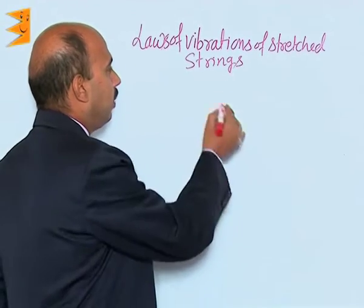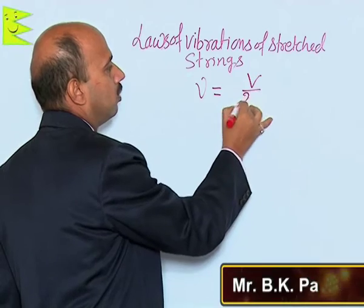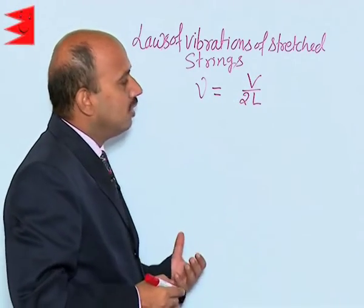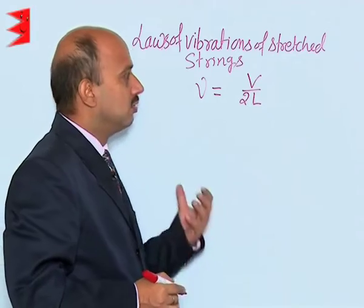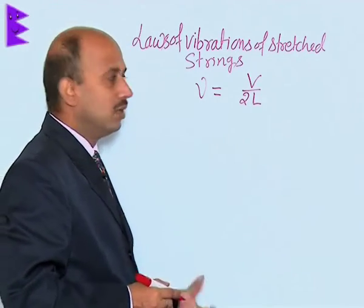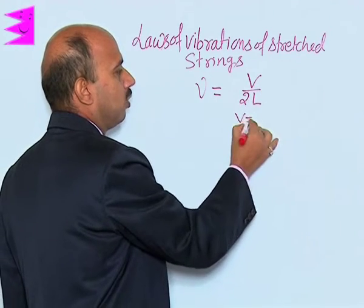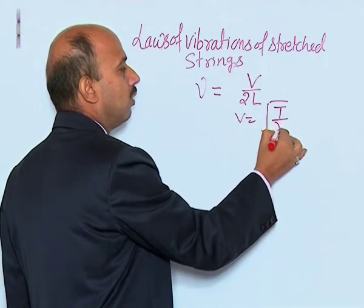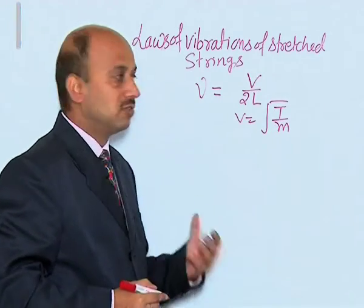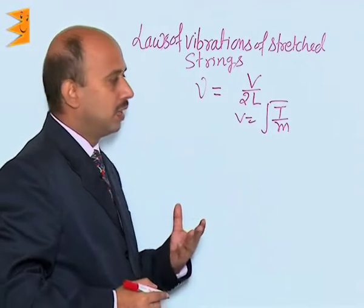We have calculated frequency ν = v/2L, which is the frequency in a stretched string for the first normal mode of vibration. Velocity is equal to the square root of T upon m, which is the velocity of a transverse wave in a stretched string, where T is tension and m is mass per unit length.